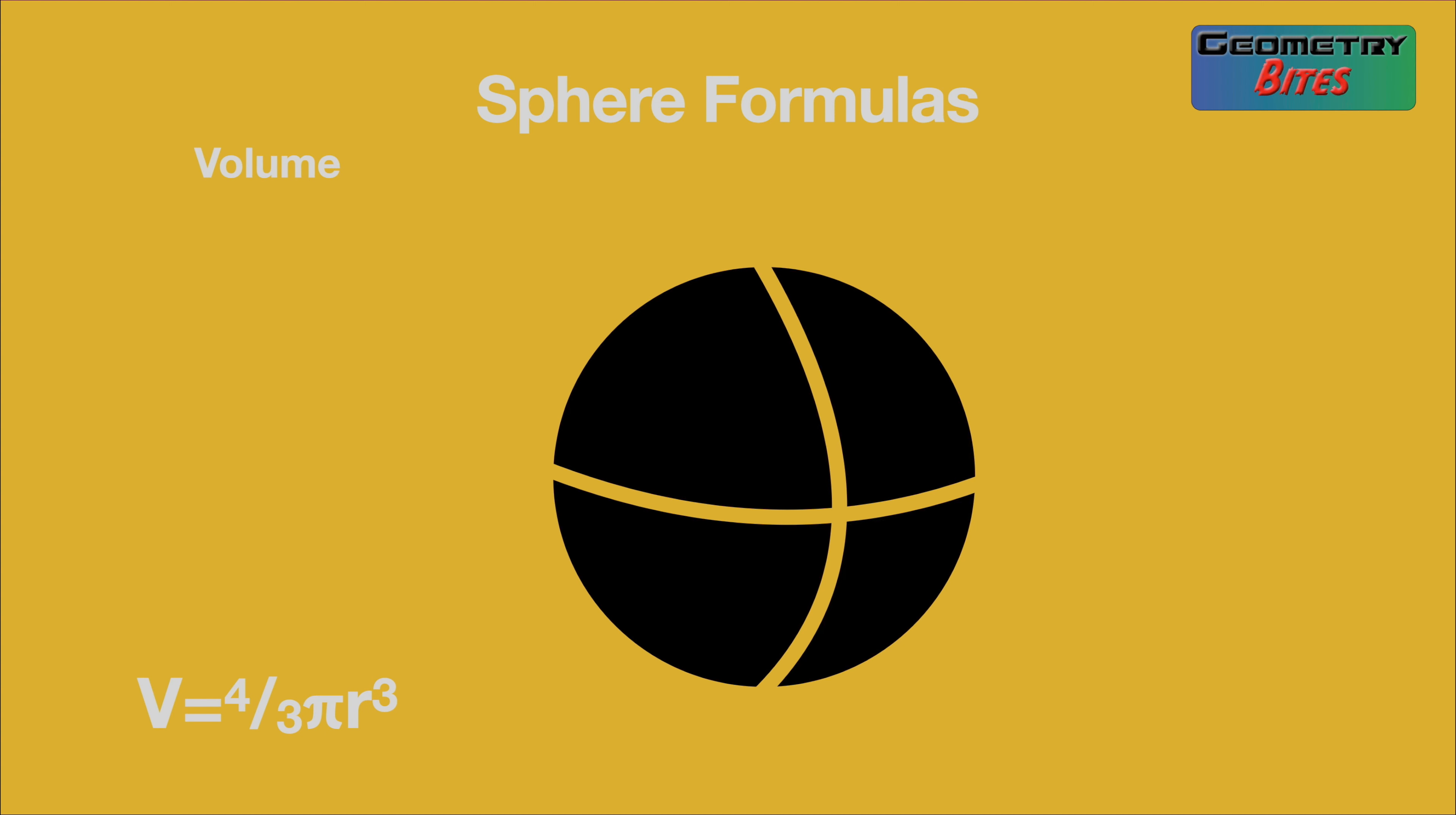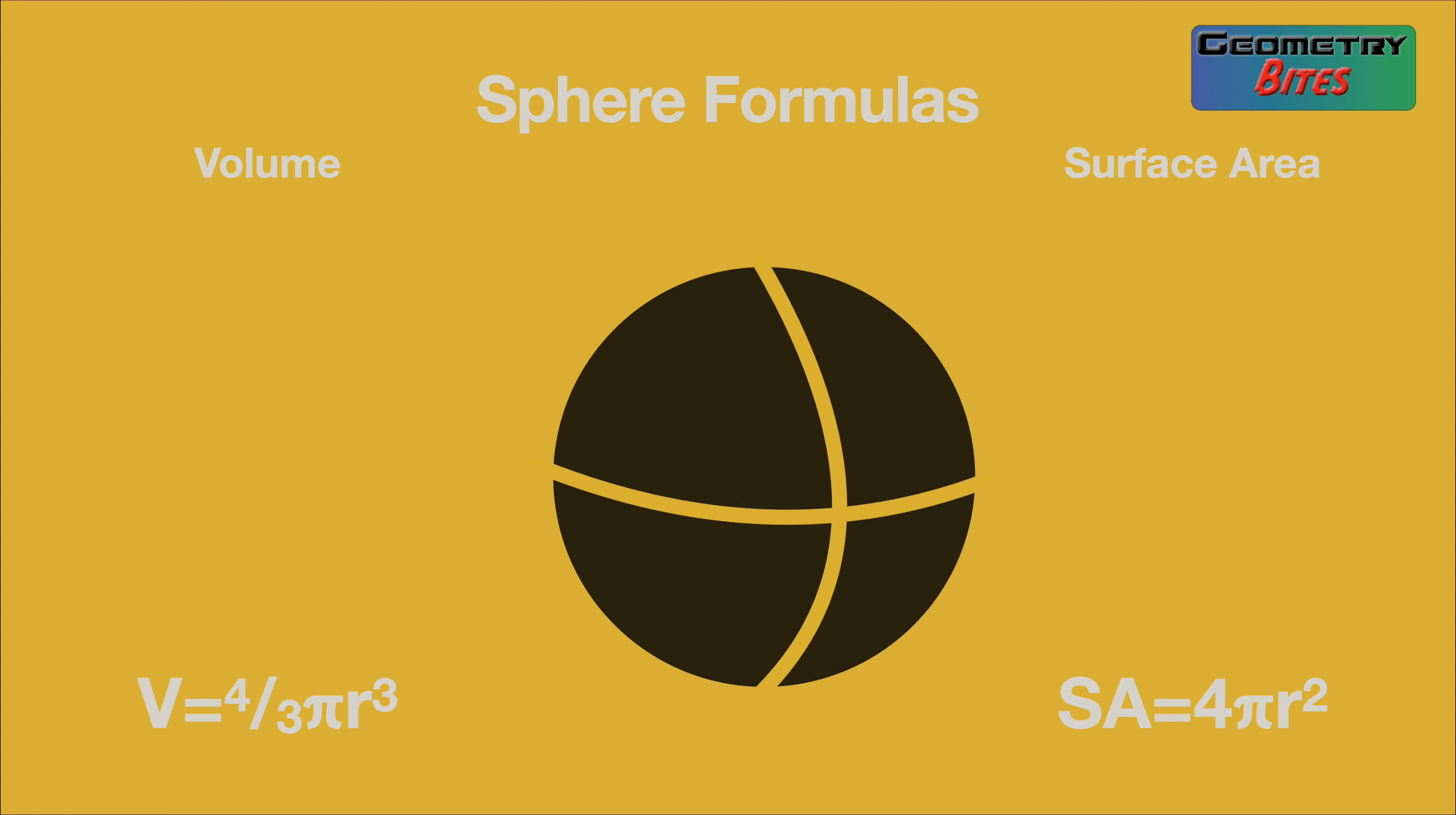If we have a sphere and we want to find the volume, it's 4/3 π r³. So instead of π r², it's basically the area times the radius again times 4/3. The surface area is 4 times π r², so it's just like four circles basically.